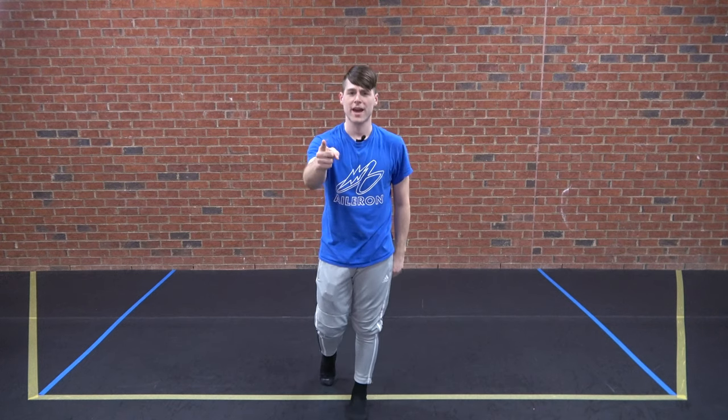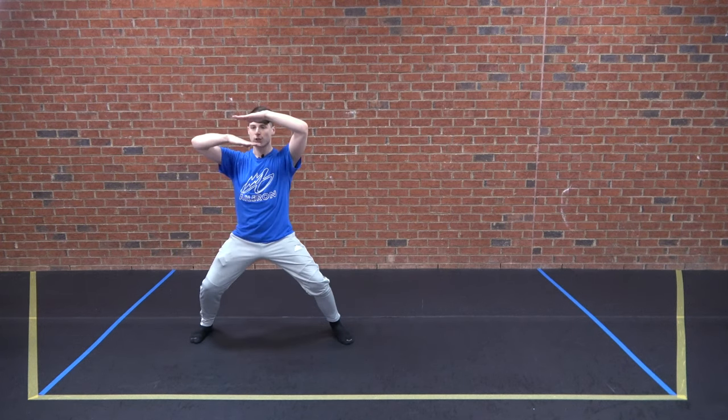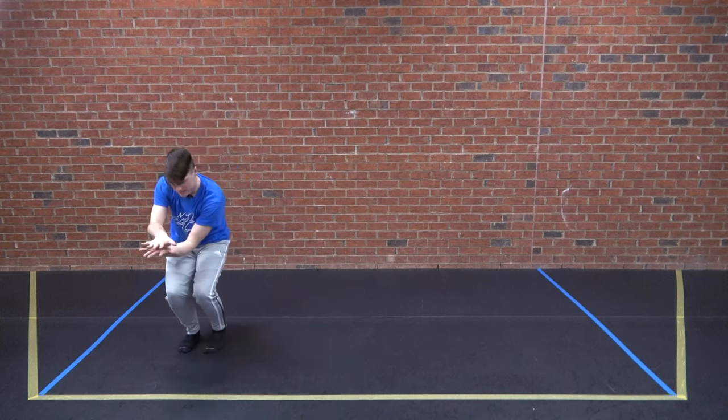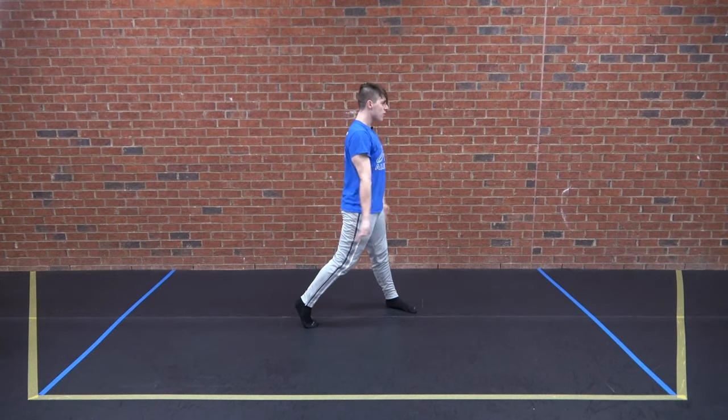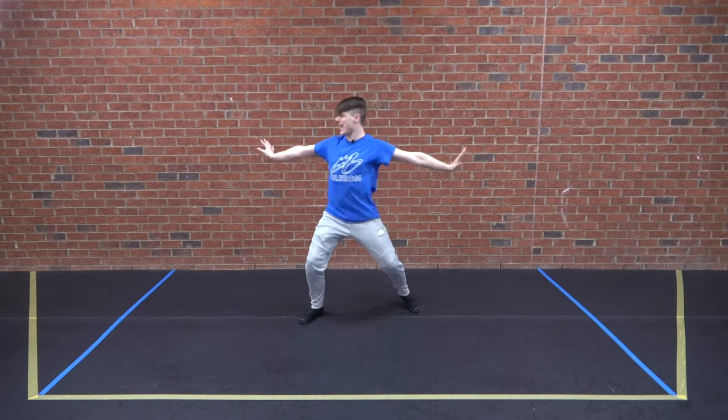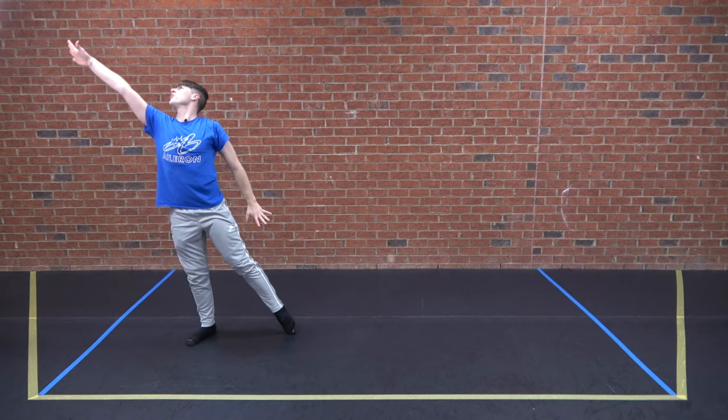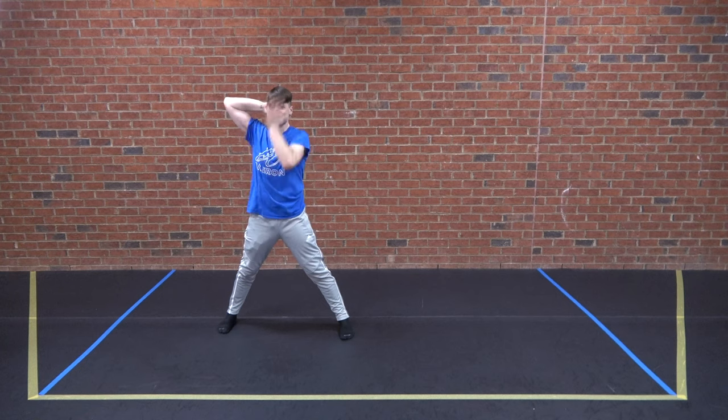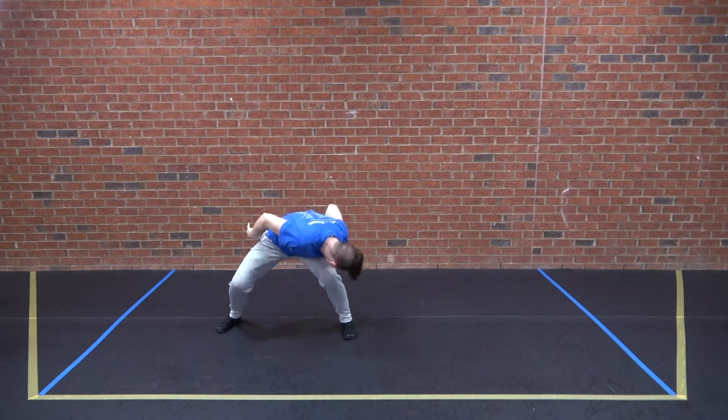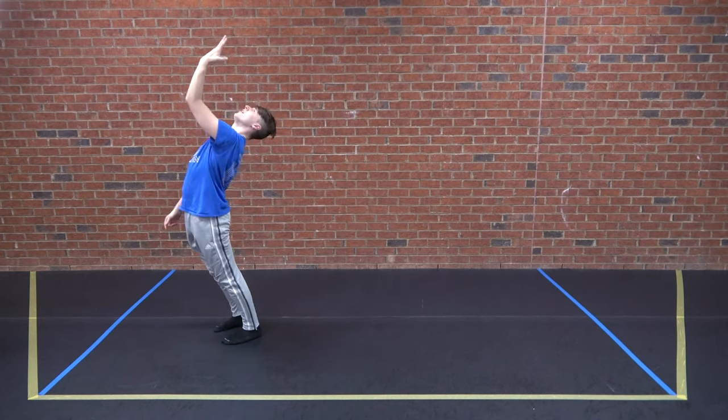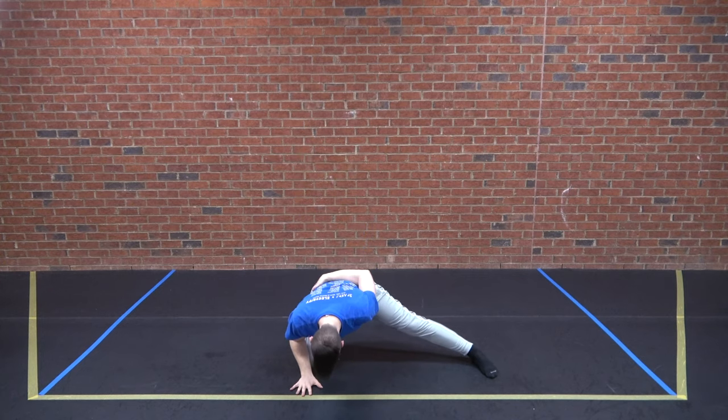Alright guys, one more time with counts, then we do it all by ourselves. Here we go. Four, five, six, seven, eight. One, three, four, one, three, four, one, five, six, seven, eight. One, two, three, four, five, six, seven, eight. And one, two, three, four, five, six, seven, eight. One, two, three, four, five, six, seven, eight. One, two, three, four, one, three, four, one, three, four, five, and six, seven, eight. One, two, three, four, five, six, seven, eight. One, two, three, four, five, six, seven, eight. One, two, three, four, five, six, seven, eight.